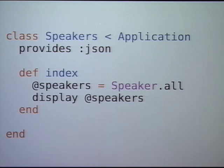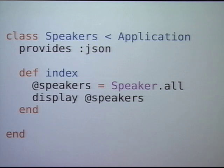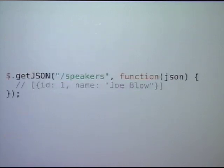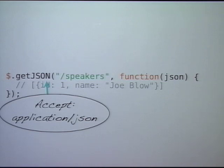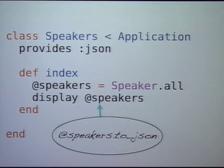The next thing I'll talk about is something simple about how Merb and jQuery work together. You've probably seen something like this — a speakers controller, say provide JSON, speakers equals Speaker.all, display speakers. It automatically figures out what type of thing you want. If you're HTML, it'll automatically try to render index.html.erb. If you're JSON, there won't be an index.json.erb, so it'll try to do speakers.to_json. And the way this works in JavaScript with jQuery is that if you ask for JSON using $.getJSON and hit the URL, it will automatically send a header Accept: application/json, which will make display_speakers do the right thing.